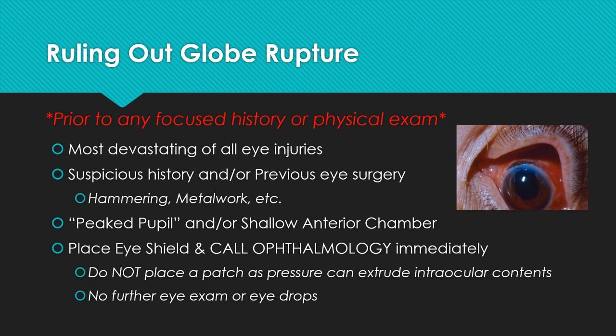Some things to consider when ruling out globe rupture are a patient with a suspicious history of hammering or metalwork, or a patient with previous eye surgery. Some signs that could signal an open globe include a peaked pupil or a shallow anterior chamber. If a globe rupture is confirmed, immediately place an eye shield — not a patch — on the eye, as a patch can extrude intraocular contents with the pressure it applies. Call ophthalmology immediately and do not perform any further exam or apply any eye drops to the eye.